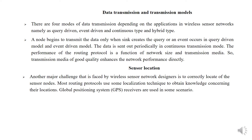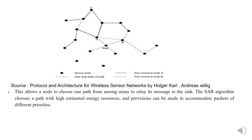Sensor location: another major challenge faced by wireless sensor network designers is to correctly locate the sensor nodes. Most routing protocols use some localization technique to obtain knowledge concerning their location. Global Positioning System (GPS) sensors and GPS receivers are used in some scenarios. This allows a node to choose one path from among many to relay messages to the sink.